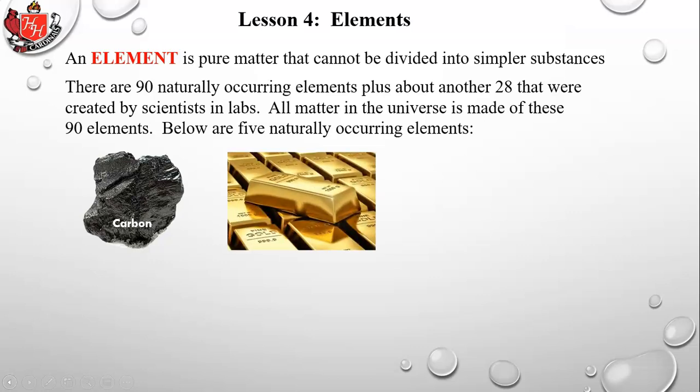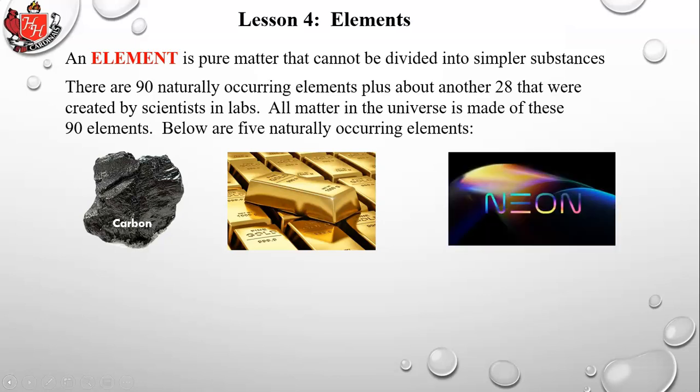Gold has many industrial uses as well as being a commodity for storing wealth. Neon is often used for lighting; it's a gas and one of the noble gases.